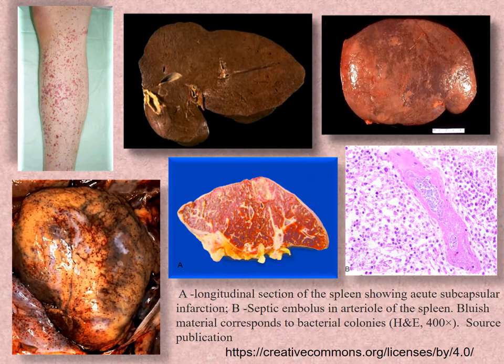This slide shows illustrations of septicemia: petechial rash in the leg, in the skin, and pericardium. You can also see hemosiderosis of the liver, and the septic spleen — longitudinal section showing acute subcapsular infarctions. The microscopic slide shows a septic embolus in an arterial vessel of the spleen; bluish material corresponds to bacterial colonies.